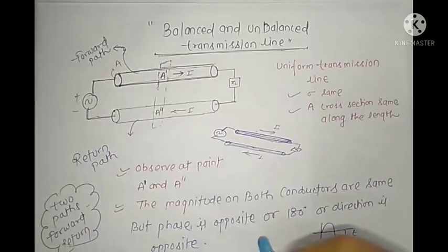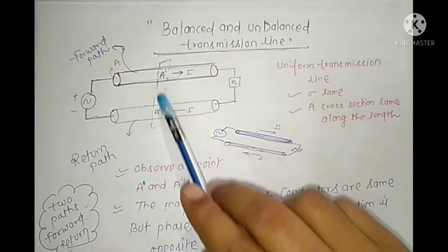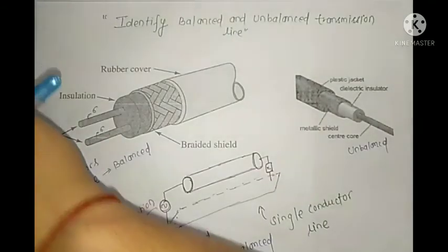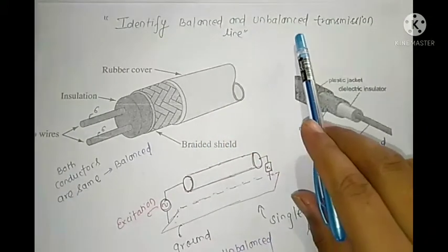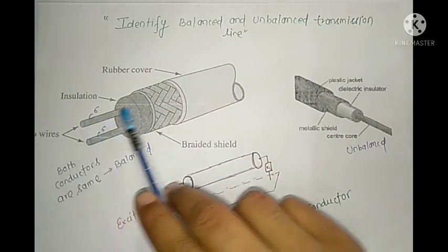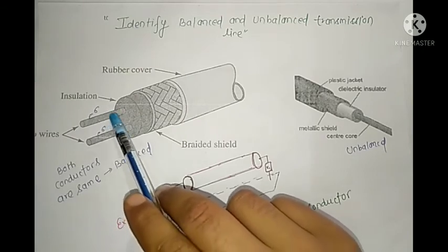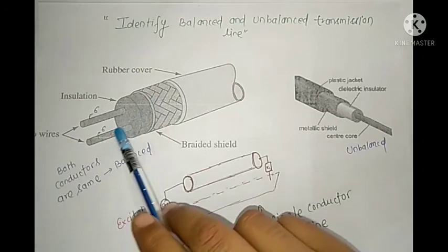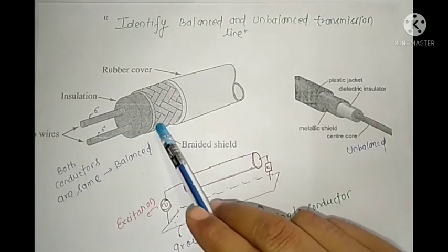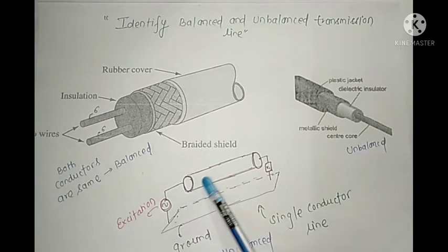For a balanced transmission line, at any particular point the current will be opposite in phase. Let's identify which examples are balanced. If two conductors have the same cross-sectional area along their length and at any particular point the current is opposite in phase, with similar geometry for both conductors, the decision is: balanced transmission line.